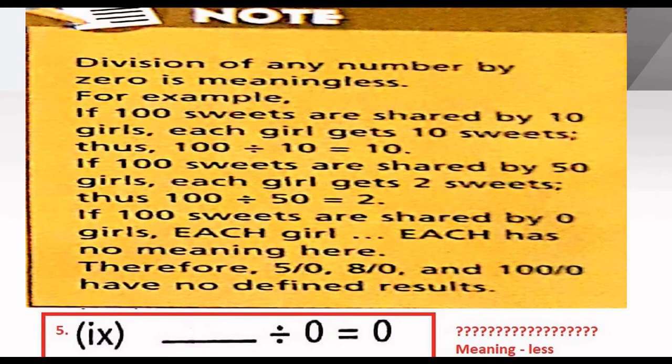Here is end of this exercise and now I am telling you a very basic and very informative note. This information will be very useful for you. Note: division of any number by zero is meaningless. For example, if 100 sweets are shared by 10 girls, each girl gets 10 sweets. Thus 100 divided by 10 is equal to 10.